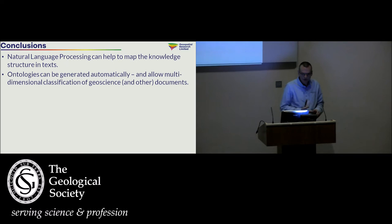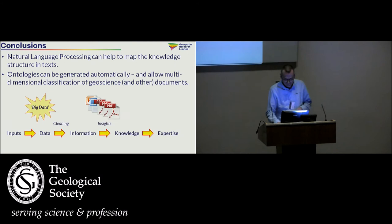To finish off, in conclusion, natural language processing can be used to map out knowledge structure, knowledge space in texts. A message for AI people is that natural language processing is very effective. Although a big focus is on neural network-based methodology, it's not the only aspect of soft computing or indeed artificial intelligence in a wider sense that is still very effective. We can generate ontologies automatically, and this allows us very rich, multi-dimensional classification of geoscience text.